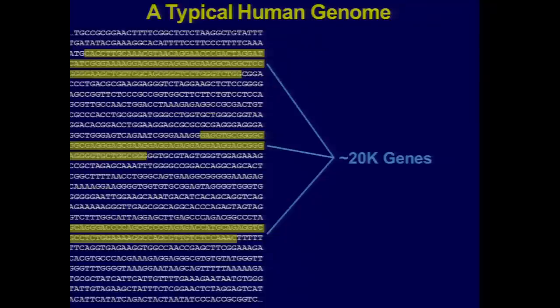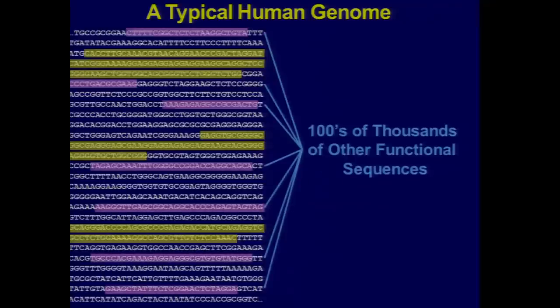These sequences determine how each of our cells actually operates that blueprint a little bit differently — whether it's a muscle cell, whether it's a liver cell, whether it's a brain cell. There's incredible biological complexity in those hundreds of thousands of other functional sequences that are telling those 20,000 genes what to do and when to do them.